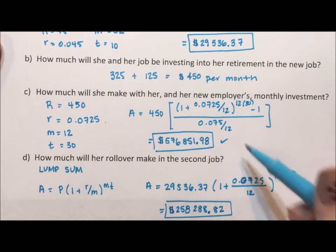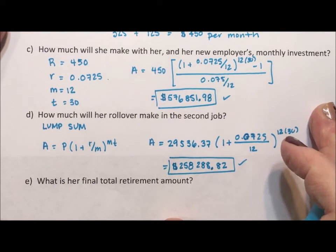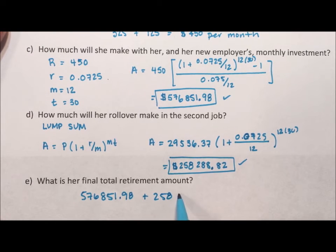Her account has both of these pieces in it, so if we want to know what her final amount is, we need to take the $576,851.98, we need to add the $258,288.82, to find out that when she retires she has in her account $835,140.80.